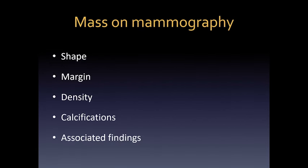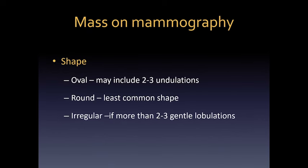We define masses on mammography according to five classifications: the shape, the margin, the density, the presence or absence of associated calcifications, and the presence of associated findings. Shape can be oval, round, or irregular. If it's oval, it can include two to three undulations.